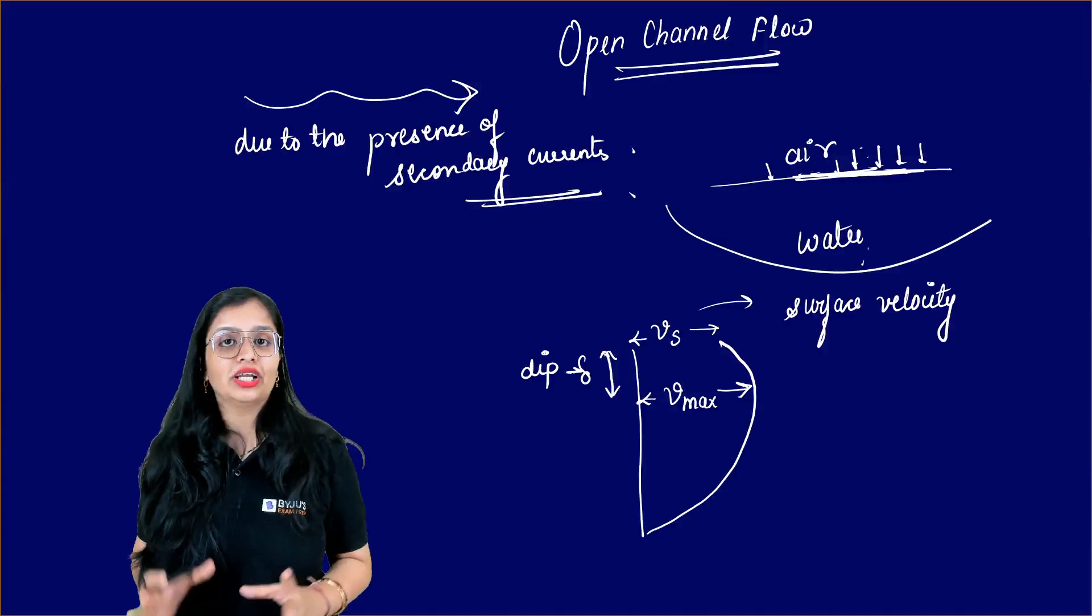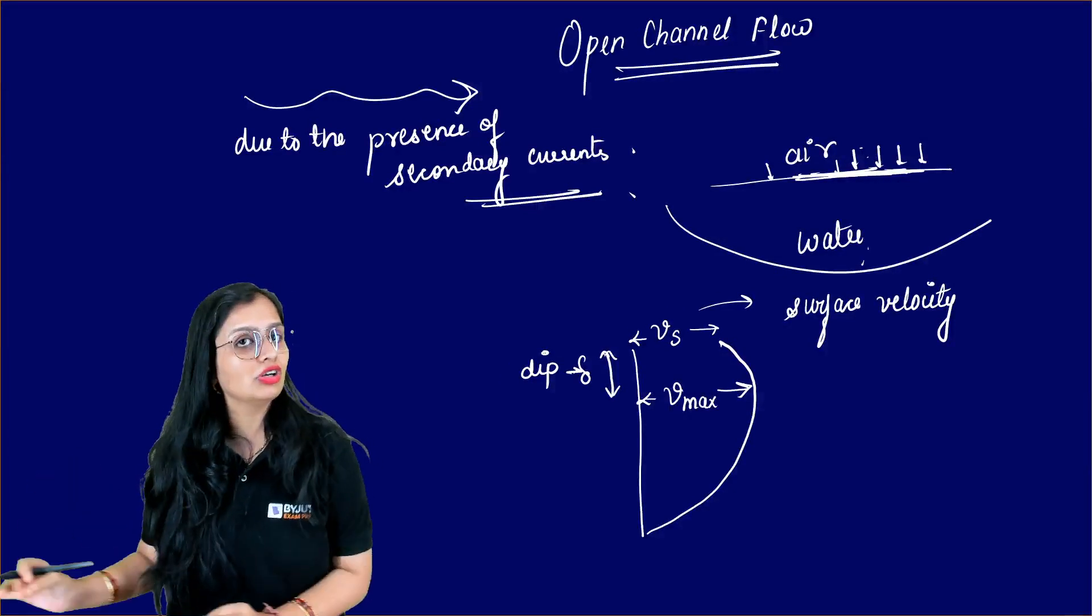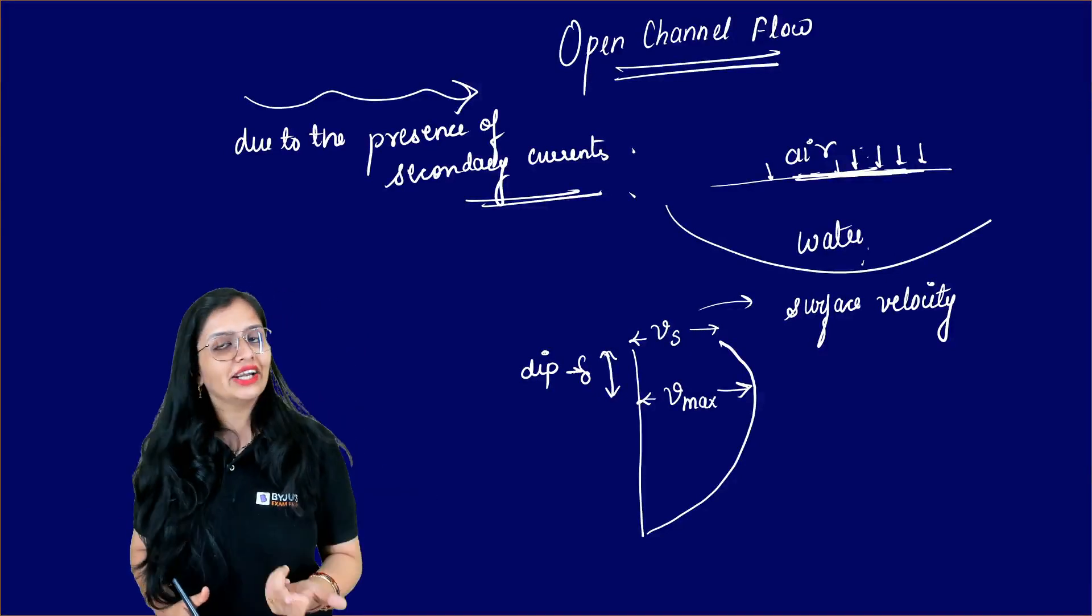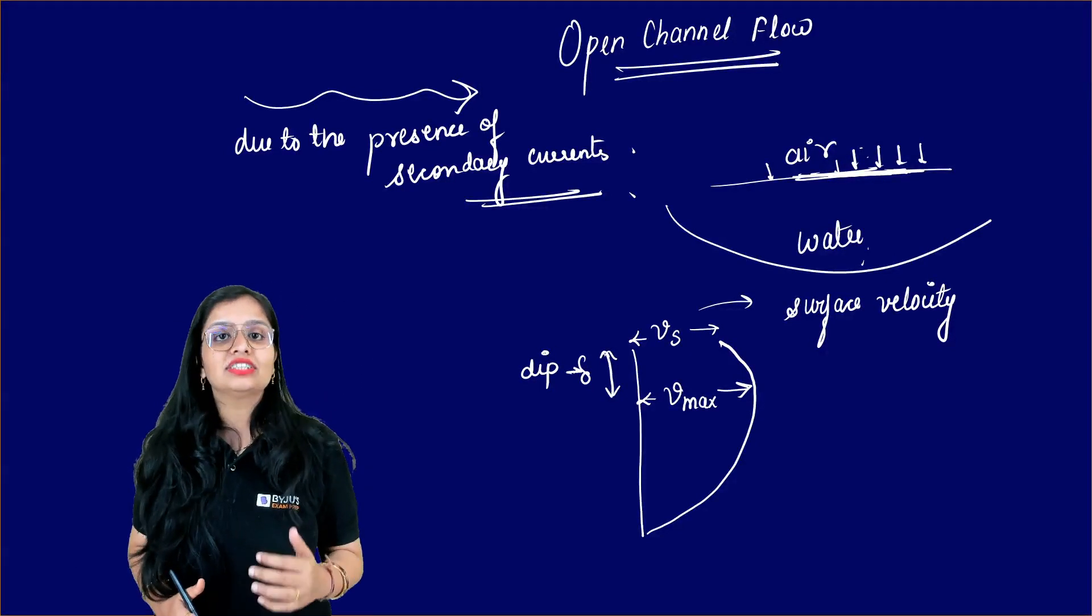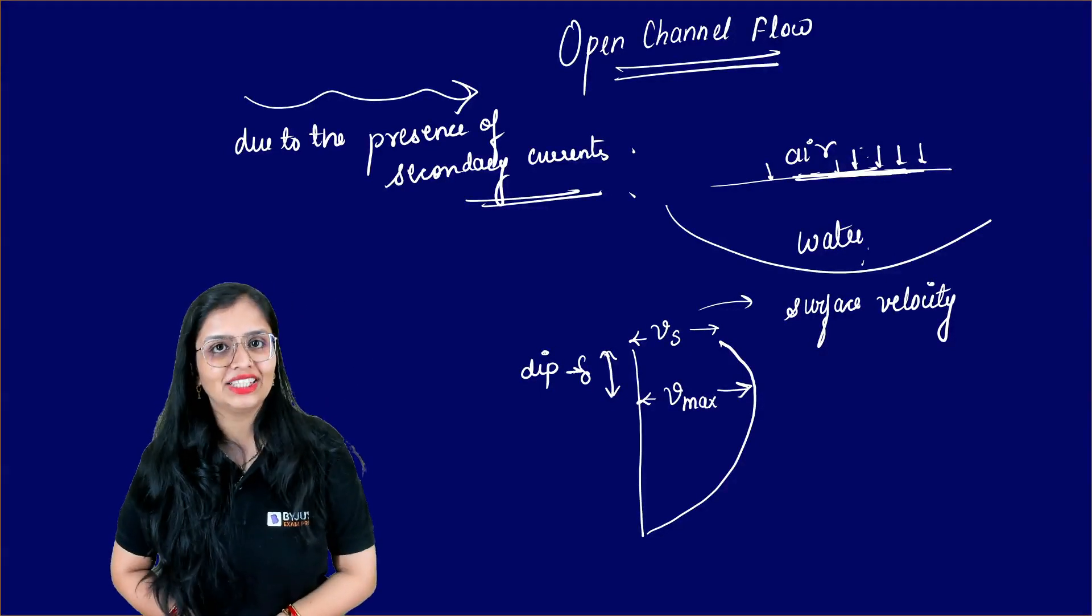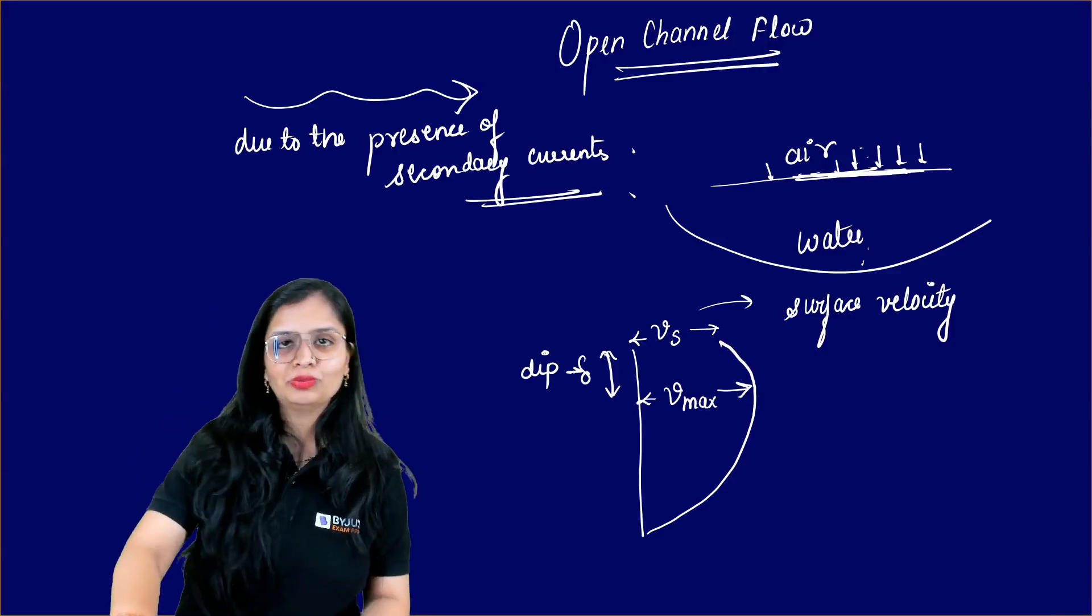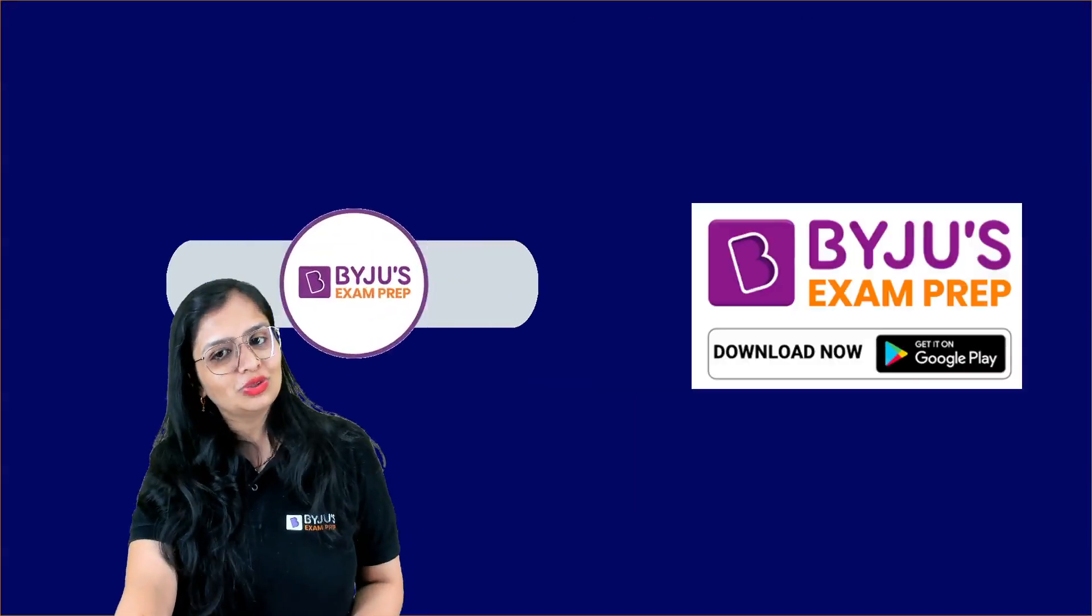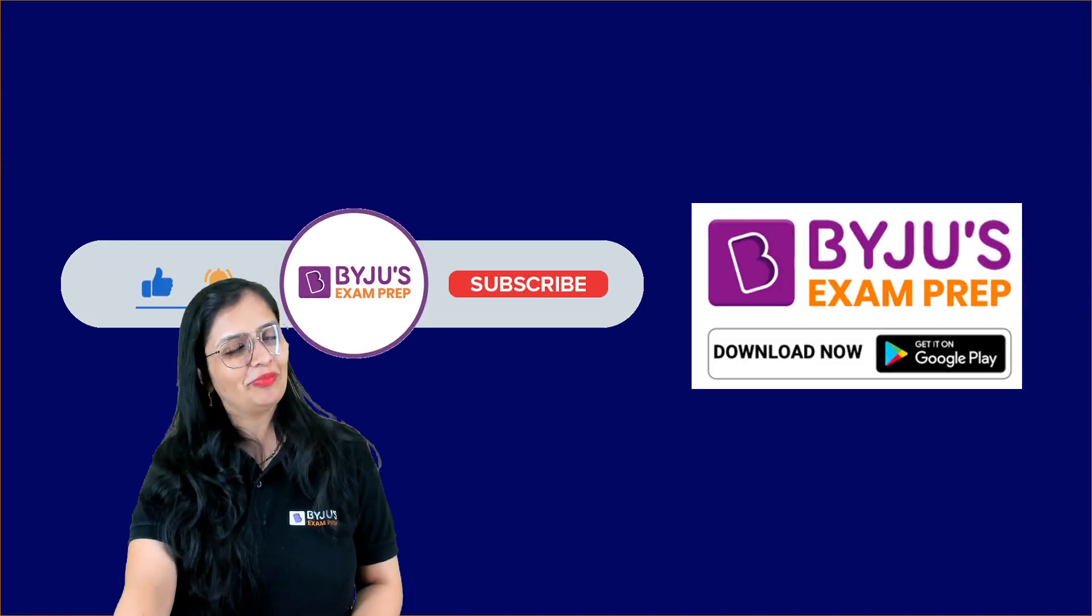But here I just wanted to tell you why maximum velocity does not occur at the surface. Technically, due to the presence of secondary currents when you have significant flow in that normal direction. So I hope this concept was quick and you understood it. For more such videos, subscribe to Byju's Exam Prep. Thank you everyone.